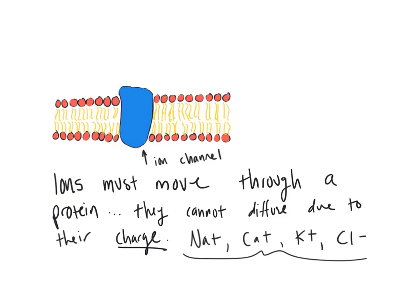Just know that because ions are charged, they can't pass through the hydrophobic middle of the cell membrane where all the fats are — that leaves them no choice but to use an ion channel. That sums up ionic bonding and examples with table salt and ions that move across the cell membrane. Now we can move on to covalent bonds.